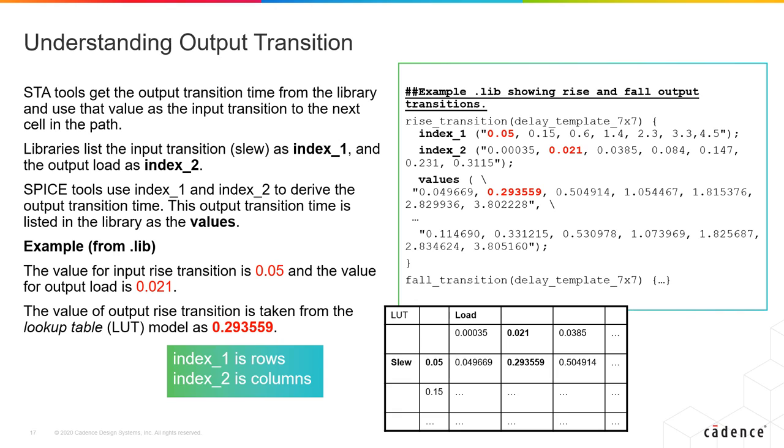To reiterate, the STA tools calculate the output transition times and use that value as the input transition to the next cell in the same path or next stage. This is how we propagate the delays and cells and find out the delays throughout the path from these lookup tables from one stage to the next and so on.